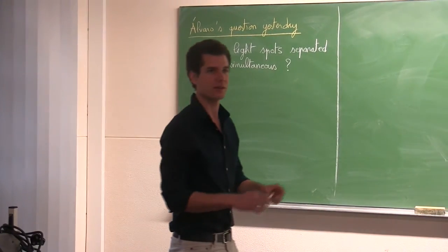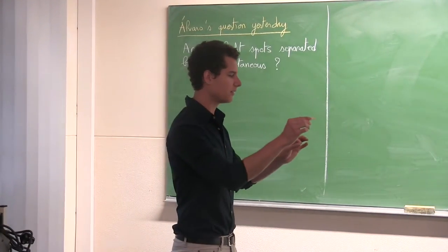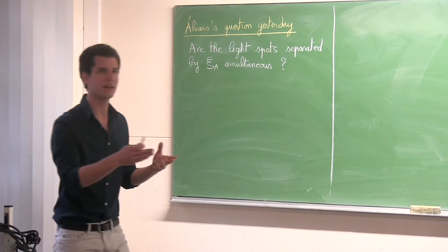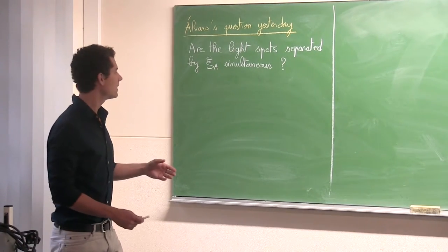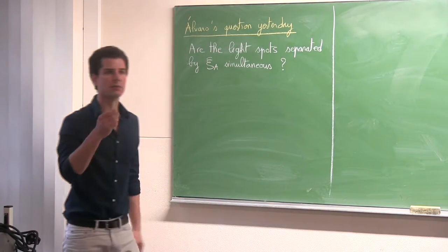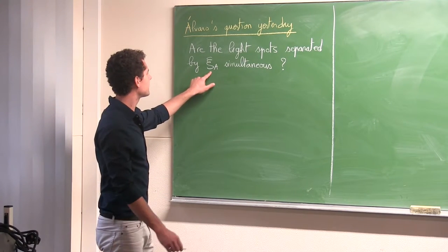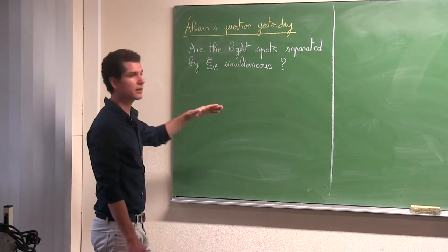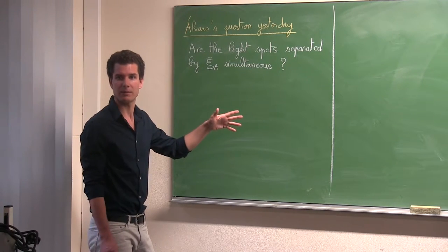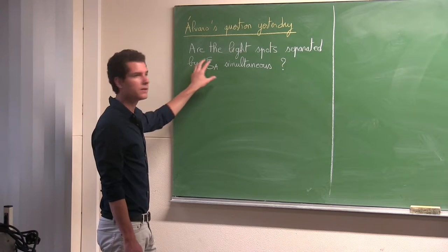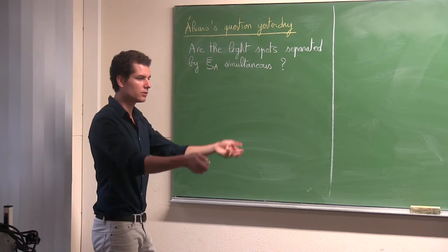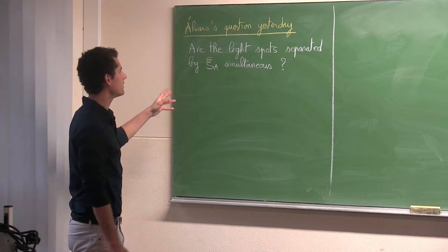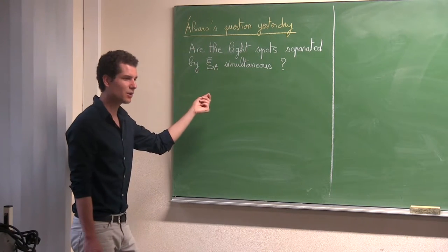When we discussed the relative position of two light spots on the screen, there was this question of whether we can really consider them simultaneous. The bottom line is: because we define the separation vector XI-A as the screen projection of the separation vector defined on ISO affine parameter surfaces, can we really consider this as the separation between two light spots received by an observer at the same time? The answer is you cannot really say that, but the result is the same.